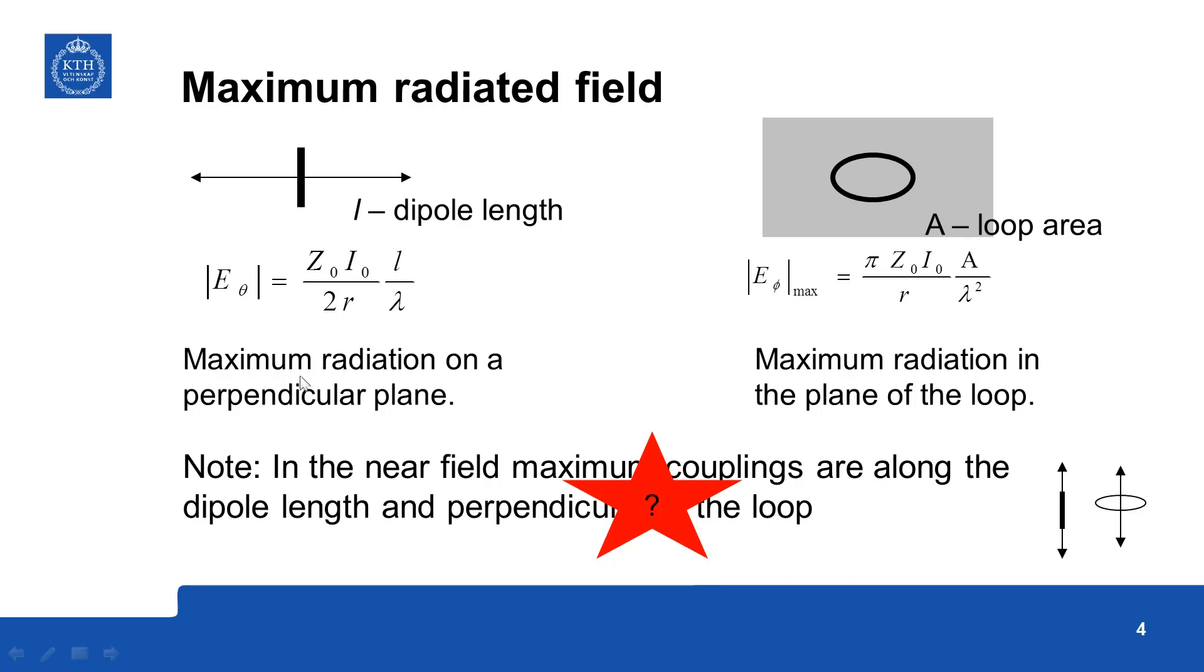And here the maximum radiation for a loop is in the plane of the loop.